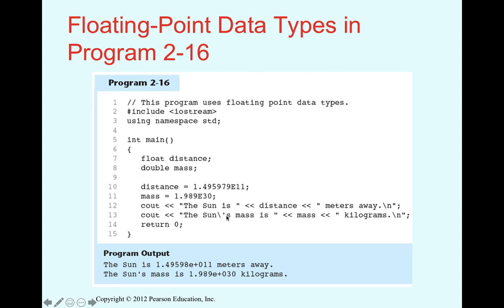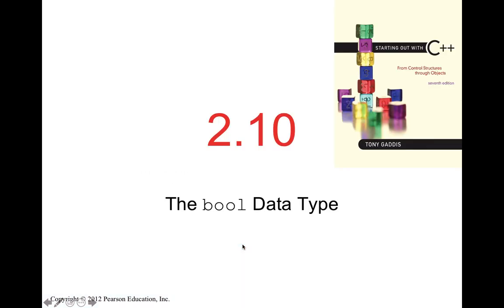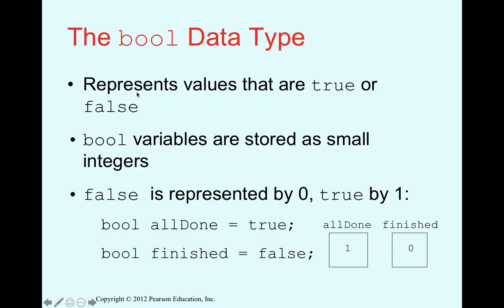The output will display values in scientific notation. The next section covers the bool data type. A bool variable can hold only two values: true or false. Internally, bool values are stored as small integers — false is represented by 0 and true by 1. So when you assign 'true' to a bool variable, it actually stores 1.